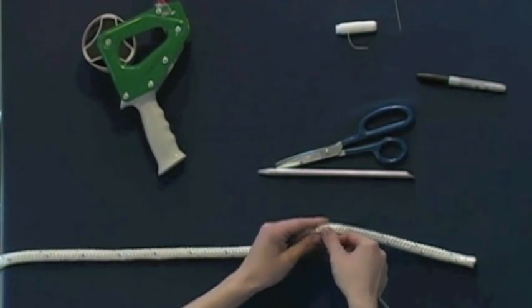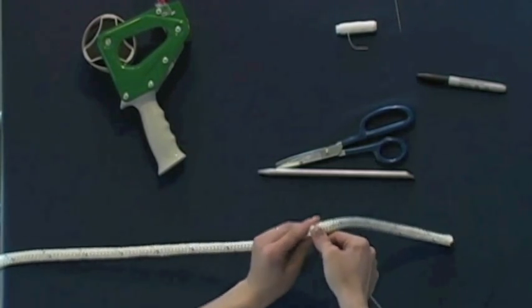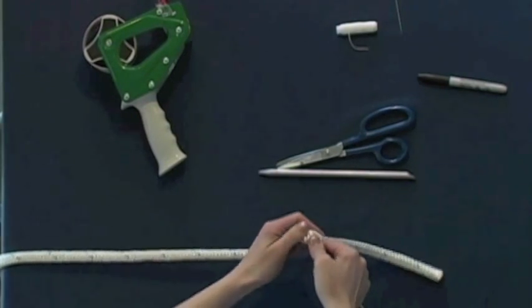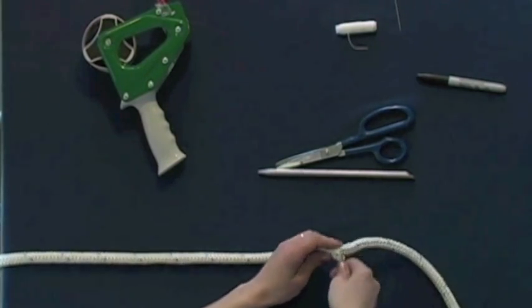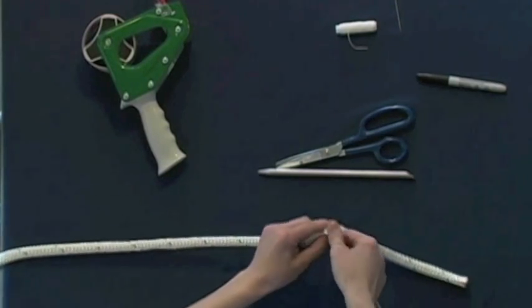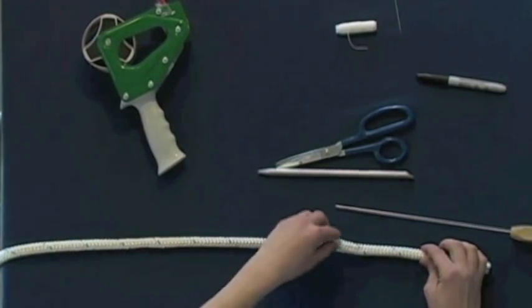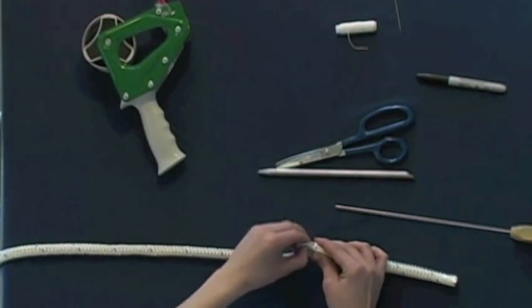Sometimes you might have to work with your pusher a little bit to make sure that you are actually getting the core and not the cover. Once you get a portion of the core out, you should be able to grab it and pull the core out from the cover.